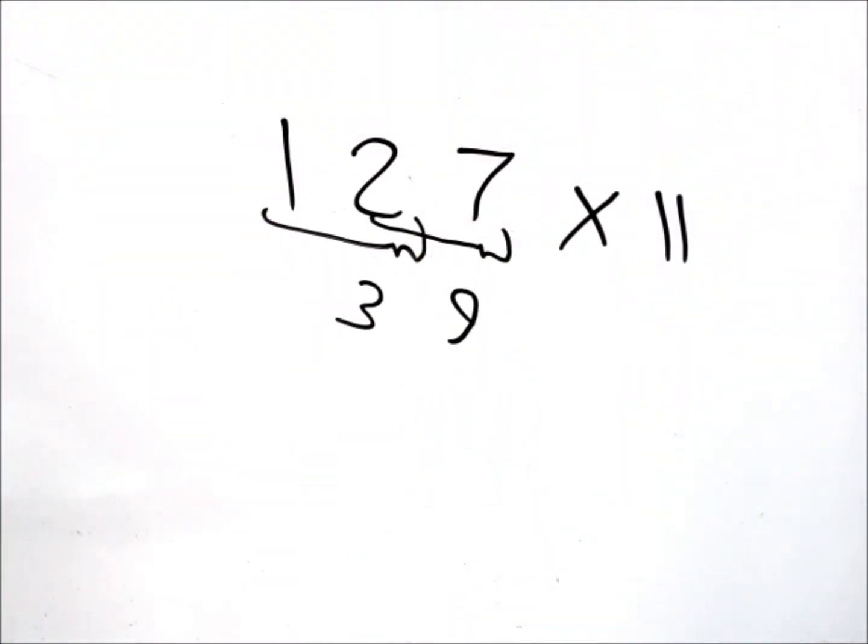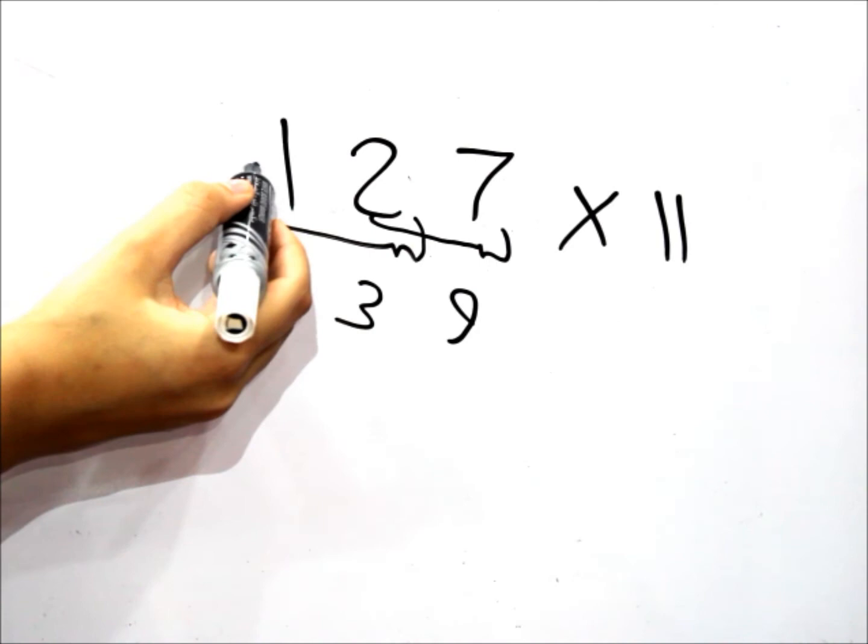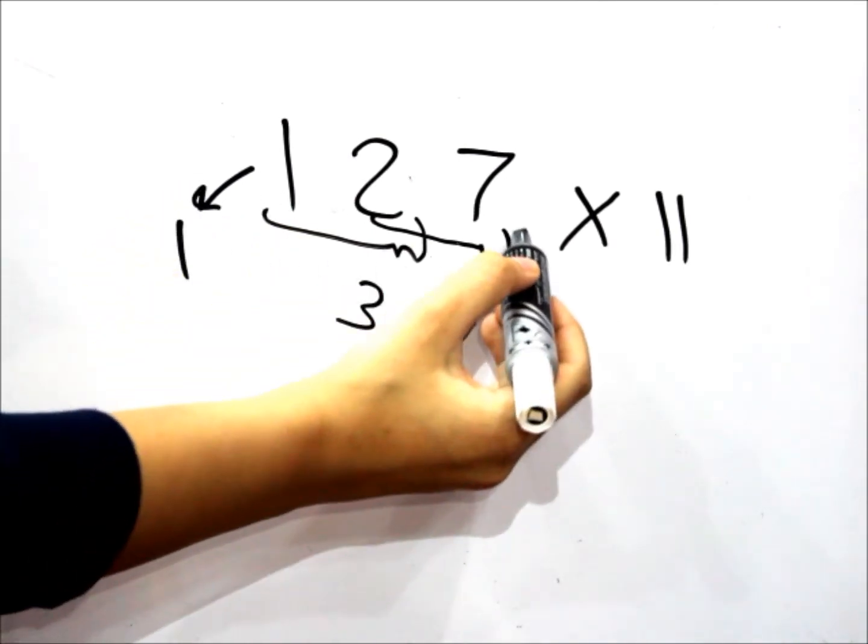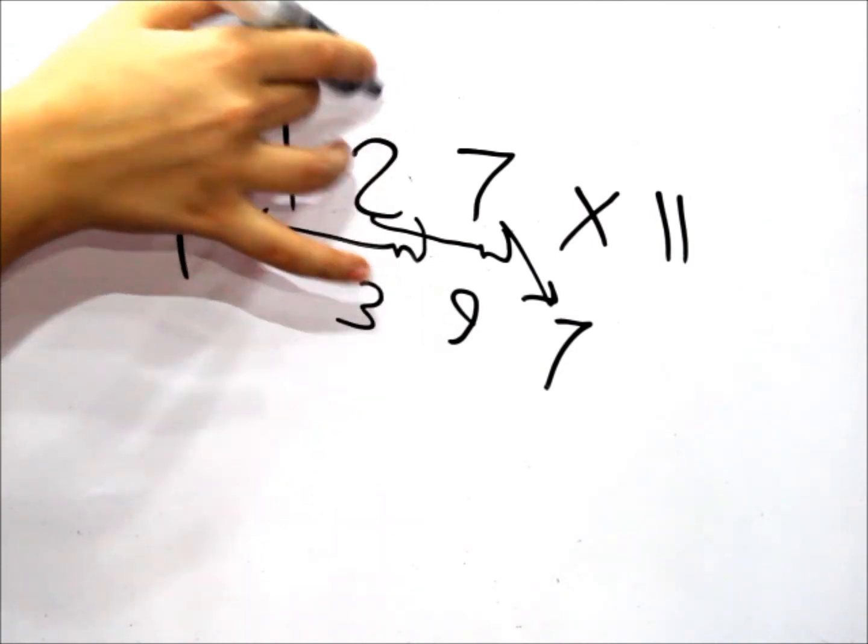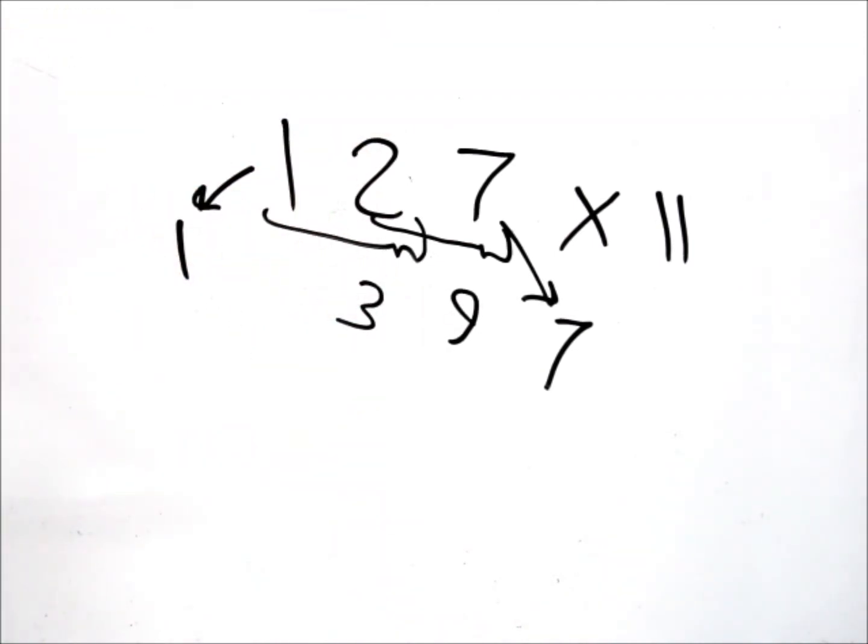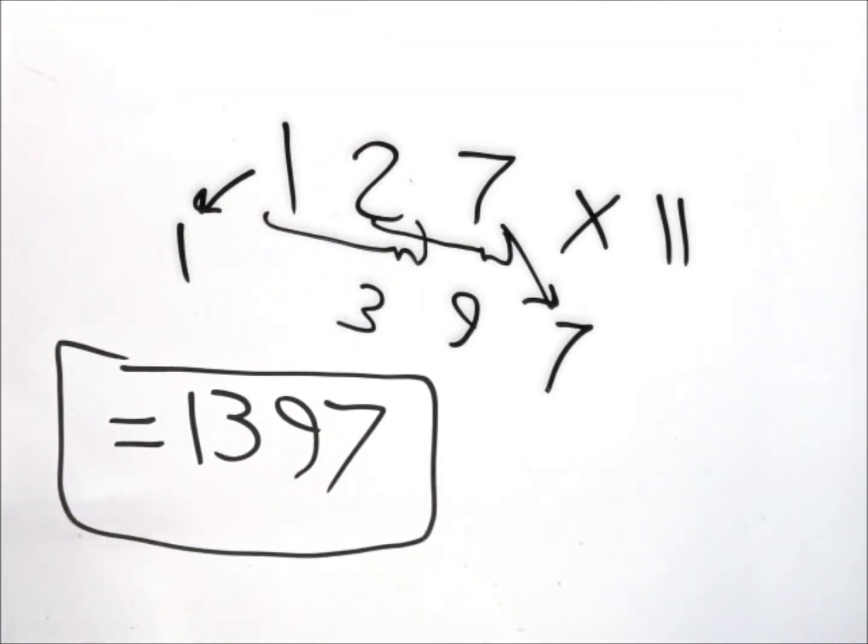And then we're going to do the same thing we used to do before. Place down the 1, place down the 7, and we just ignore the 2. So the answer is 1397. This would be our final answer.